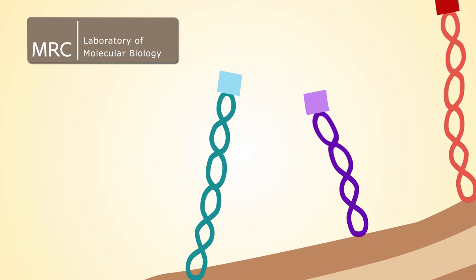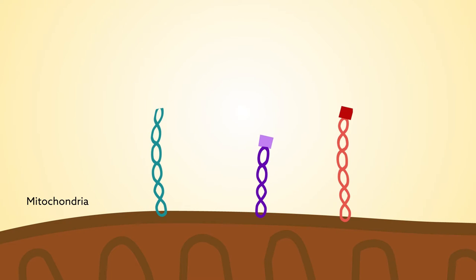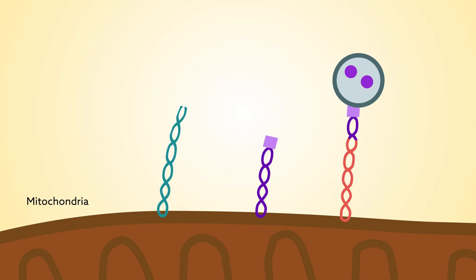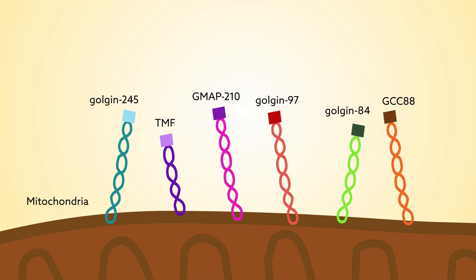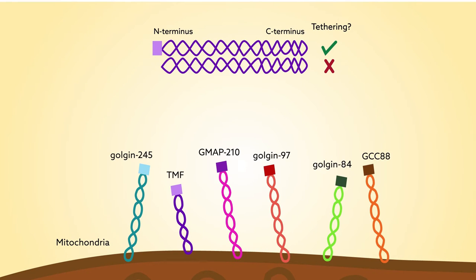To find out which parts of the Golgins provide this critical address function, the team relocated the proteins to the mitochondria, then deleted or mutated different sections to see which sequences were critical for capturing vesicles. They tested six mammalian Golgins and found that bits located at the N-terminal ends were doing all the postal code work.